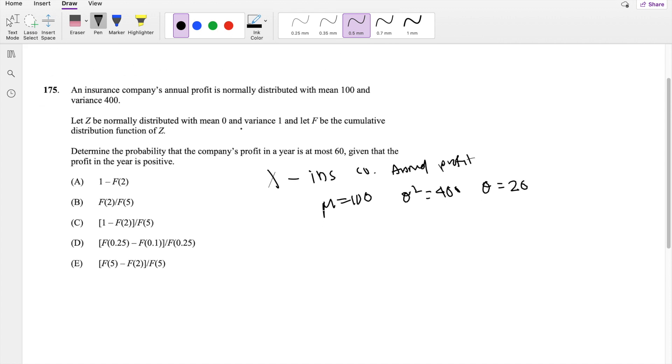Let Z be normally distributed with mean 0 and variance 1. So they're basically just saying here that F is a standard normal distribution. They're asking, determine the probability the company's profit in a year is at most 60. What is the probability that X is at most 60? So the biggest number it could potentially be is 60, given that X in the year is positive.